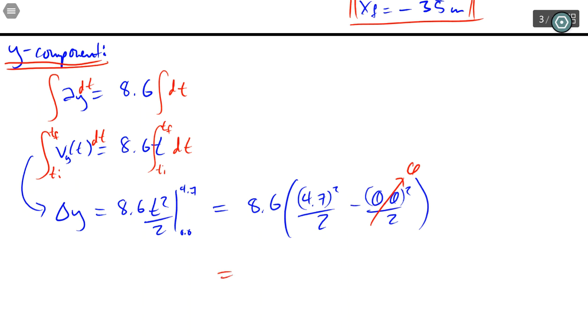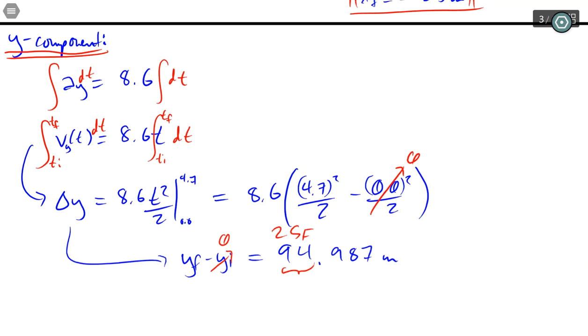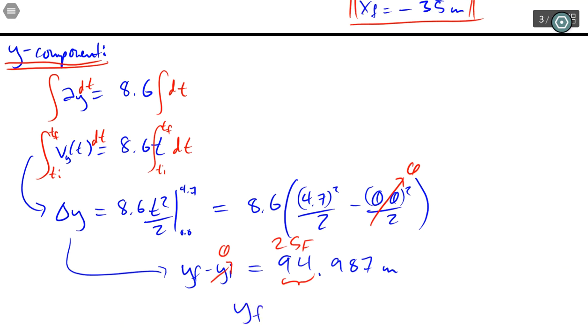Delta y is y final minus y initial; the y component starts at the origin again. Then you will get all these digits. Once again, the units are in meters, but two significant figures, so our answer is 95 meters. There you go. And once again, a reminder that the z did not move from its own position at all because it wasn't accelerating and its initial velocity was 0.